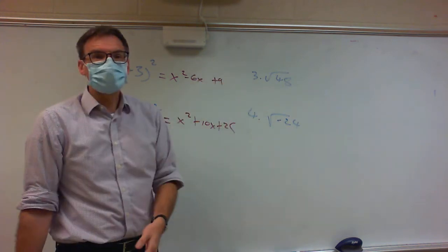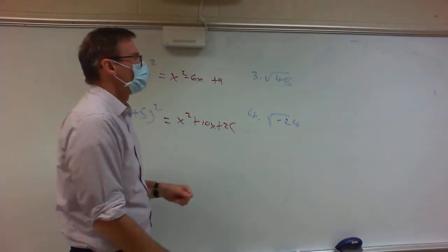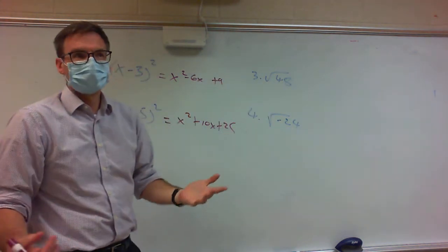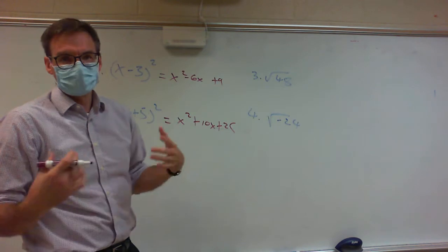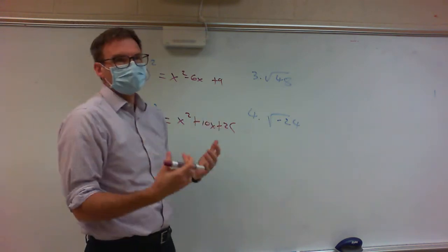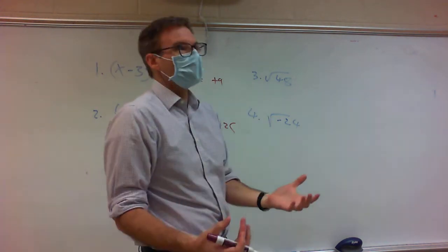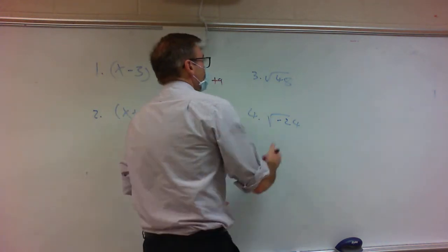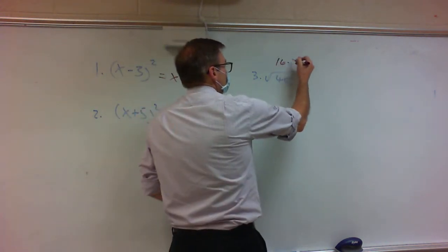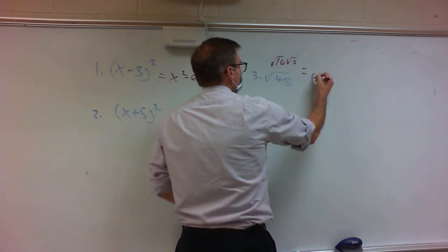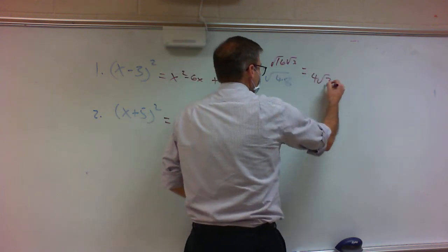A little bit of review of yesterday as far as simplifying square roots. For the square root of 48 — that's one of those you just need to know. Think of it as 16 times 3. So this is going to give me 4 square roots of 3.